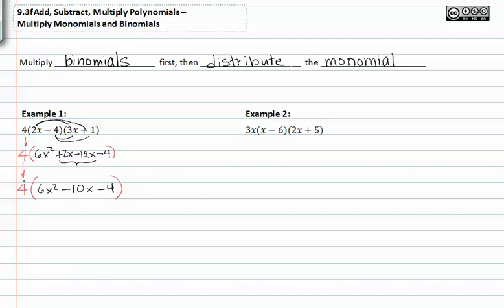Now that we have simplified the trinomial, we can now distribute the four to each term inside parenthesis. This gives us 24x squared minus 40x minus 16. Notice that there are no more like terms and we have distributed the four through to each term inside parenthesis, and that's our final solution to the expression.